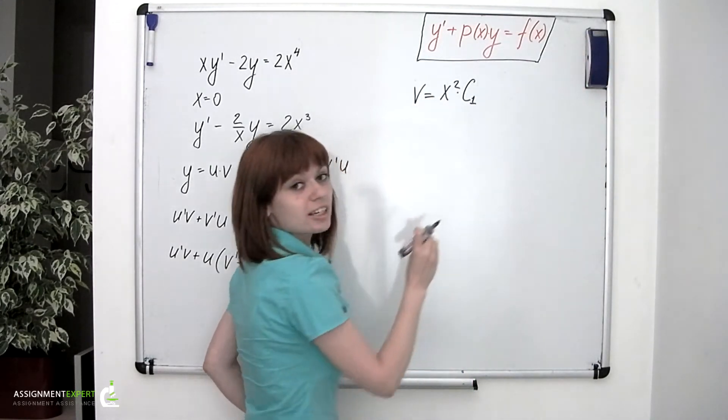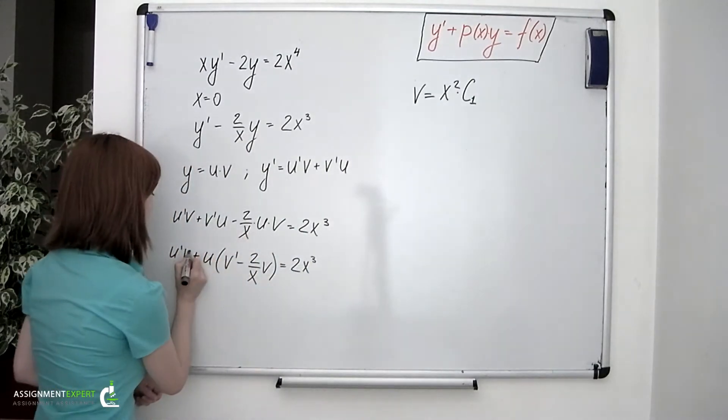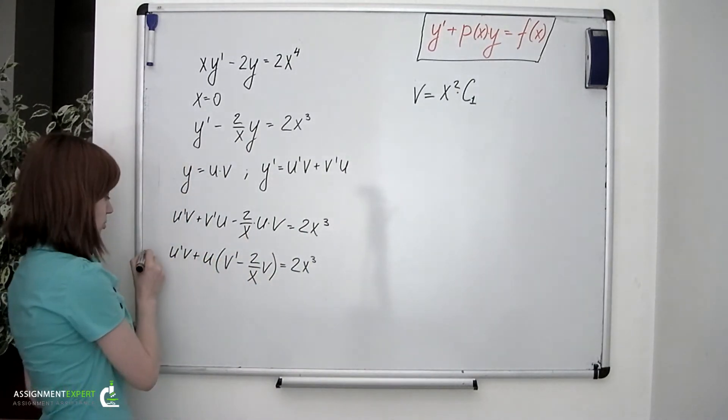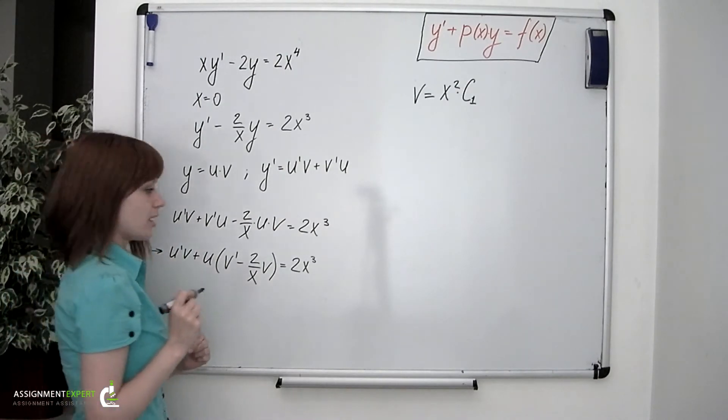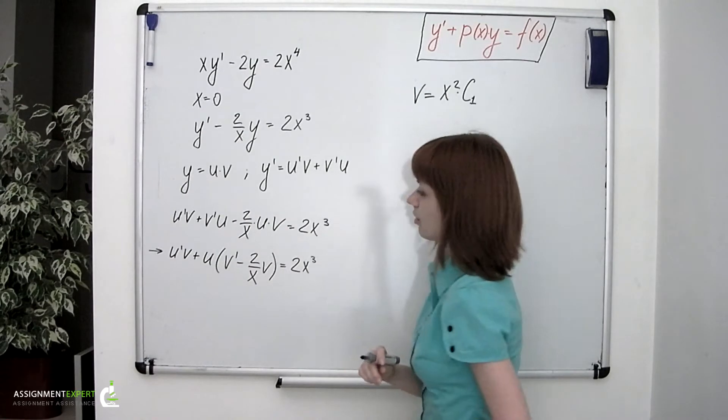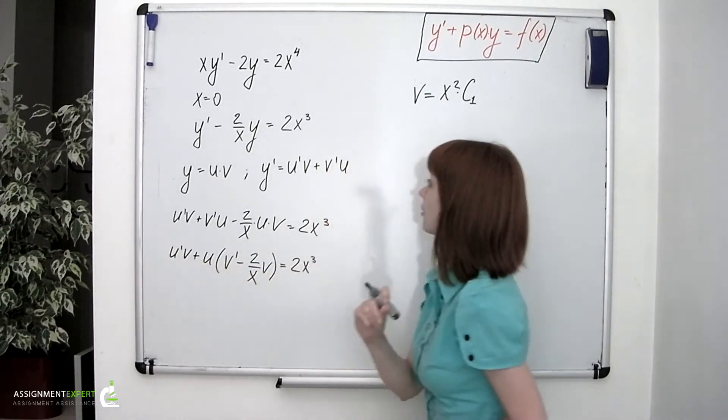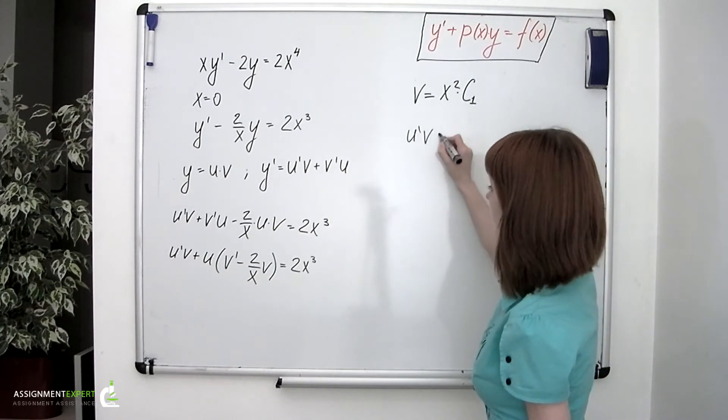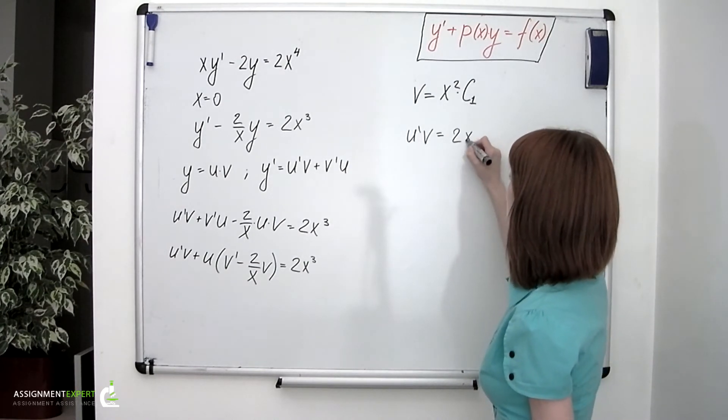To find the u function, we're going to need to look at the previously discussed equation, which is this one. And since the expression between these brackets equals 0, this equation is transformed into the following: u prime v equals 2x cubed.